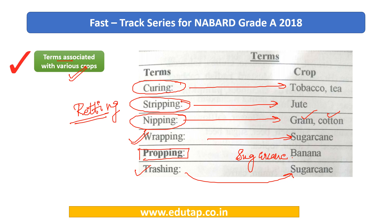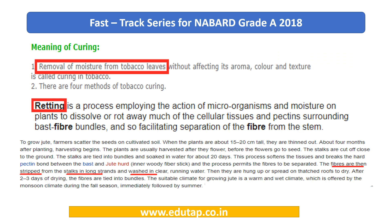Let us quickly look at the meaning of these terms. When I say curing, I mean removing moisture from the leaves. So basically it is the removal of moisture, and this is practiced both in tobacco as well as tea plants. We are not going to go very deep into it.